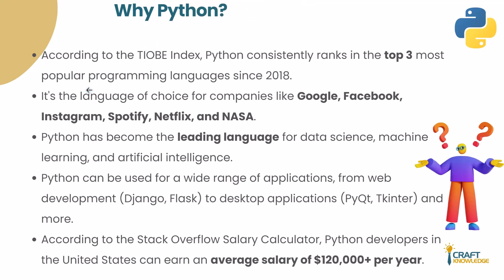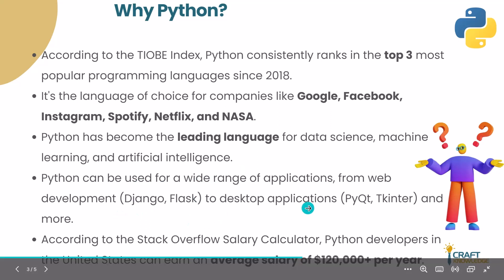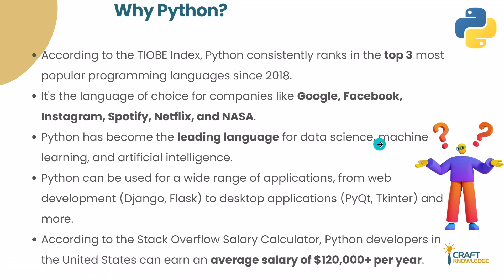Python has been in the top three programming languages since 2018, which is a huge achievement in this era of IT and artificial intelligence. It is the language of choice at giant companies like Google, Facebook, Instagram, Spotify, Netflix, and NASA. Python has become the leading language for data science, machine learning, and AI. It also has frameworks for web development like Django and Flask, and supports desktop application development with PyQt and Tkinter.